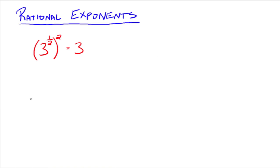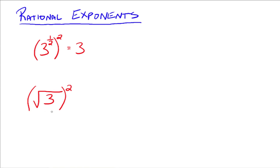We also know that if we take the square root of a number, we're looking for some number that when we square it, we get 3. So if we square the square root of 3, the square and the square root undo each other, and you're just left with 3. Since both of these equal 3, we define 3 to the 1 half power to be the same thing as the square root of 3.